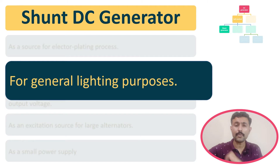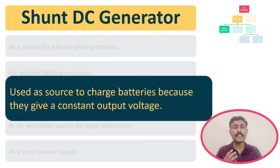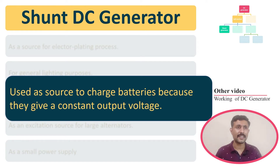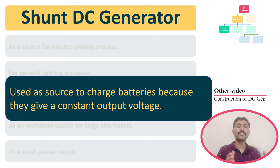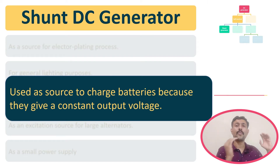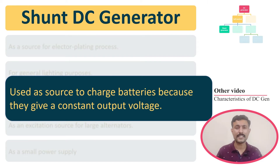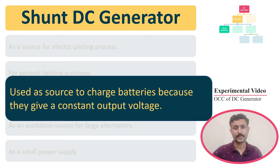The third application is that we can use the DC shunt generator as a source to charge batteries. The reason is the same: this DC shunt generator can provide constant output voltage. So wherever you require constant output voltage for your processes, you can use this DC shunt generator as your source.